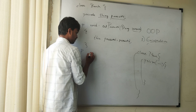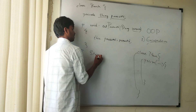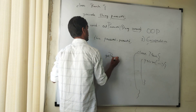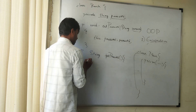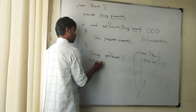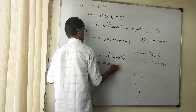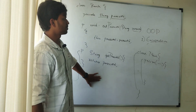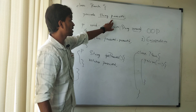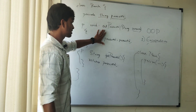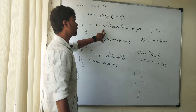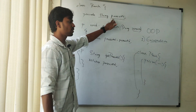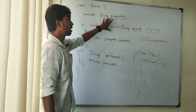Then we access the global password variable with the help of the 'this' keyword: this.password = password. This is how we set the data inside the bank object's password variable. For the getter method, the return type should be the same as the data type, and we return this.password.